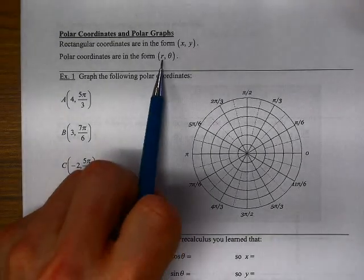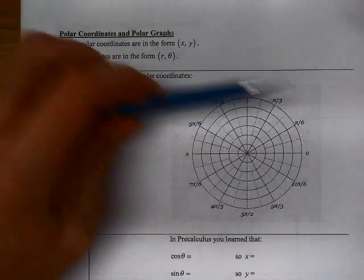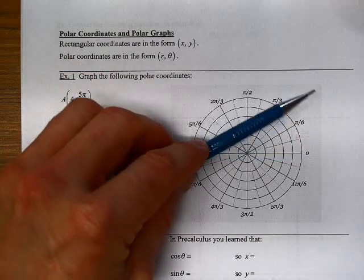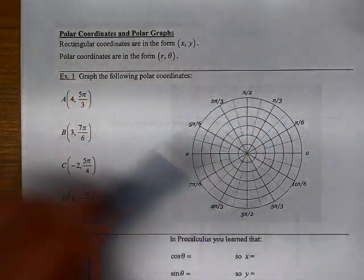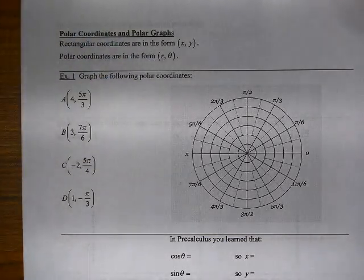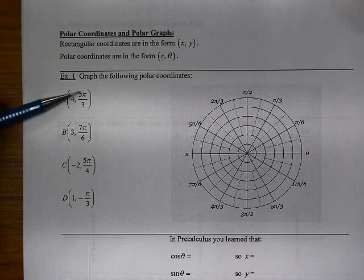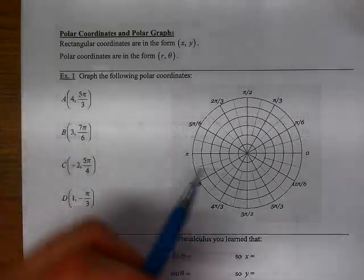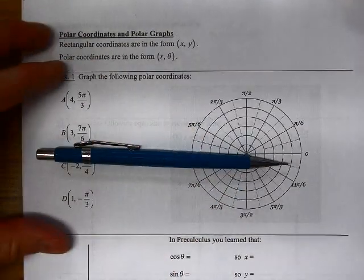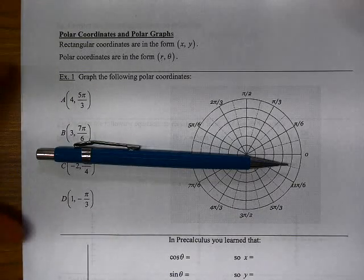They're in the form of a radius and a theta, an angular measurement. We start our angular measurement in the first quadrant. You can think of the unit circle, really. The radius tells us how far away from the origin we are. So you like to think of this angular measurement. Imagine yourself standing at the origin, and first you turn to face the direction that's indicated by the angular measurement, in this case 5π/3.